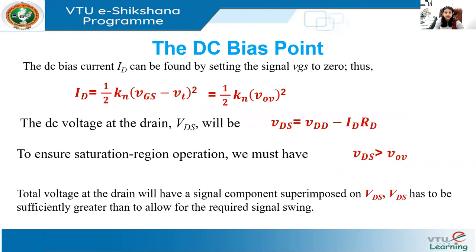Let's begin our discussion with the DC bias point. We are looking at the signal current and how you locate or decide on the location of the bias point Q. For a MOSFET amplifier, the bias point Q is determined by the value of the voltage across the gate and source, VGS, and the load resistance RD. Two important considerations in deciding the Q location are the required gain and the desired signal swing at the output.